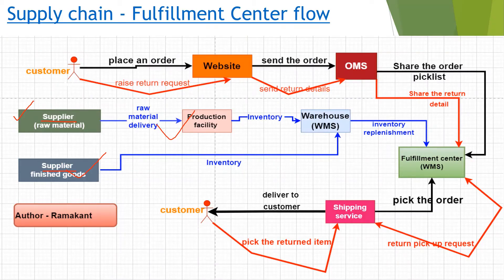Now we will see how the fulfillment center works within the supply chain. A diagram has been created showing black arrows, red arrows, and blue arrows. Black arrows show the forward customer journey when an order is placed. Red arrows show the return journey when a customer returns an item. Blue arrows show the material or inventory movement.